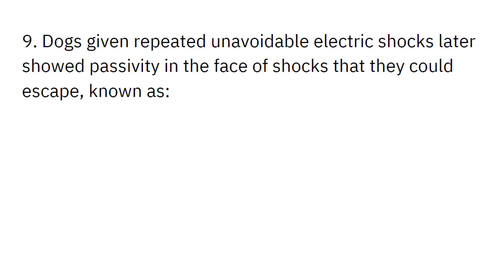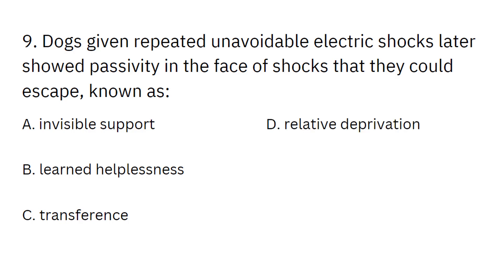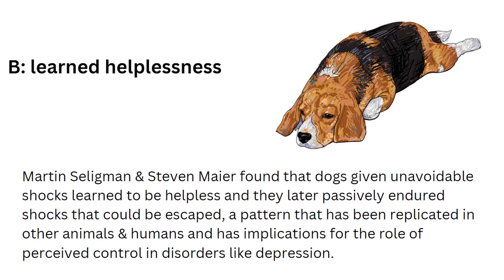Dogs given repeated, unavoidable electric shocks later showed passivity in the face of shocks that they could escape. This is known as: A) Invisible support. B) Learned helplessness. And this would be B, learned helplessness.